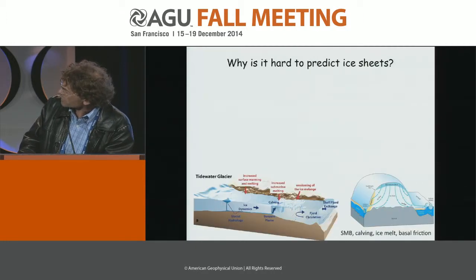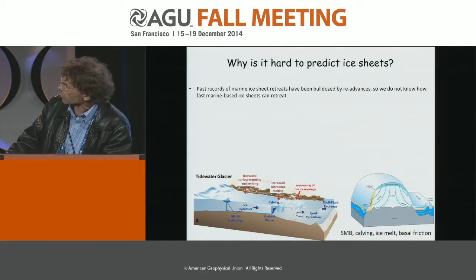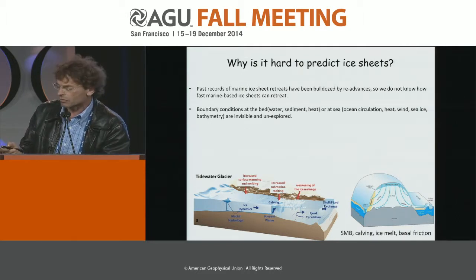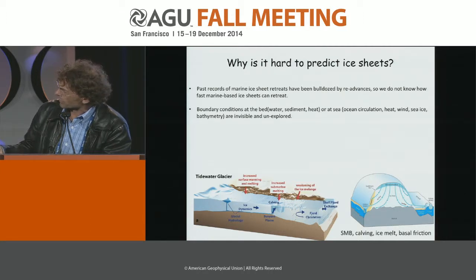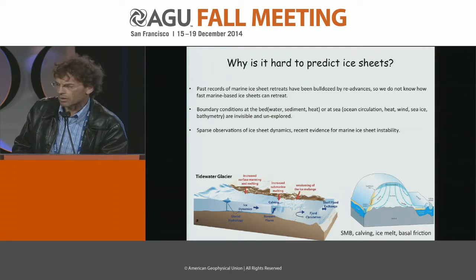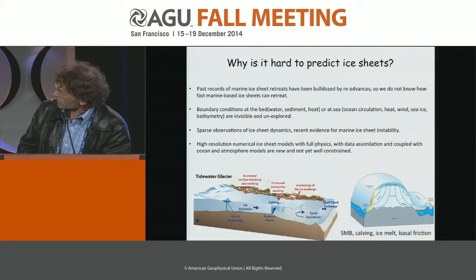Why is it hard to predict ice sheets? A lot of the records on ice sheets have disappeared. We don't have a record of how fast marine ice sheets can retreat because this has been bulldozed by re-advances, so we don't have any idea how fast these ice sheets can retreat. A lot of the critical boundaries are invisible to the naked eye — they are occurring below kilometers of ice, at the base of the ice, or below the floating ice in the ocean, not even in the surface layers but 100 meters below the surface. A lot of observations of ice dynamics have been acquired recently from satellites, but we still have sparse observations, and evidence for marine ice sheet instability is also very recent.